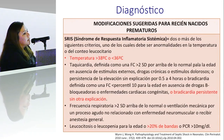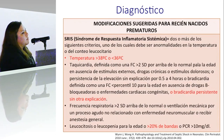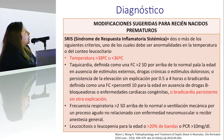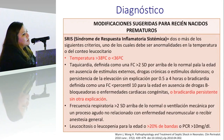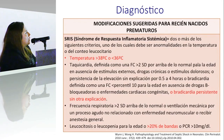La bradicardia persistente sin otra explicación se agregó como criterio porque en adultos y pacientes pediátricos solamente se toma en cuenta la taquicardia. Sin embargo, en estos pacientes prematuros, bradicardia persistente sin otra explicación puede ser uno de los criterios de síndrome de respuesta inflamatoria sistémica.